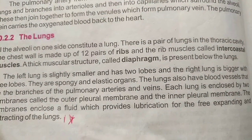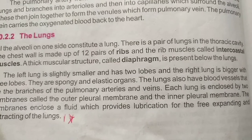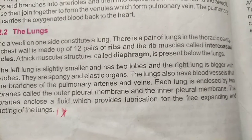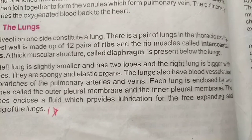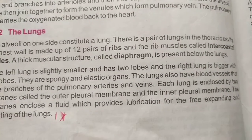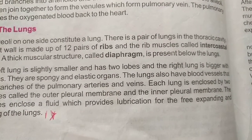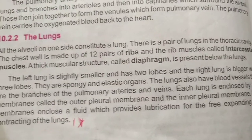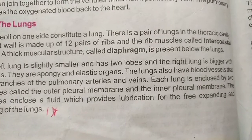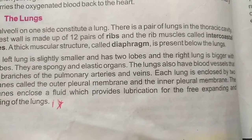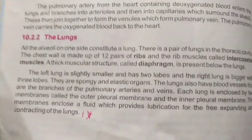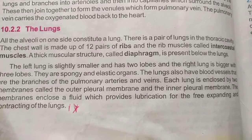All the alveoli on one side constitute a lung. There is a pair of lungs in the thoracic cavity. The chest wall is made up of 12 pairs of ribs and the rib muscles called intercostal muscles. A thick muscular structure called the diaphragm is present below the lungs, separating it from the abdominal cavity where the stomach is present.